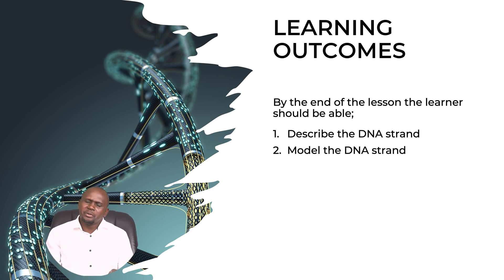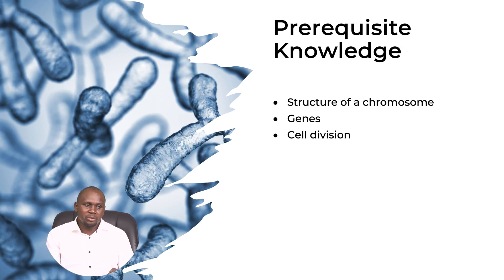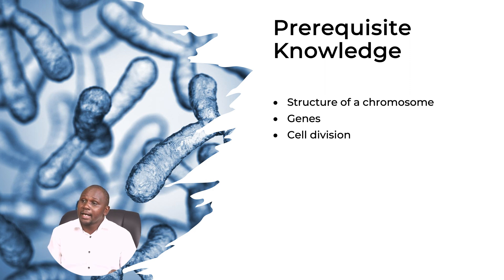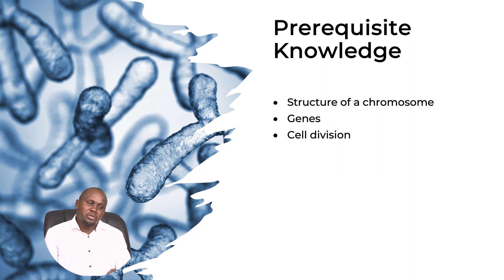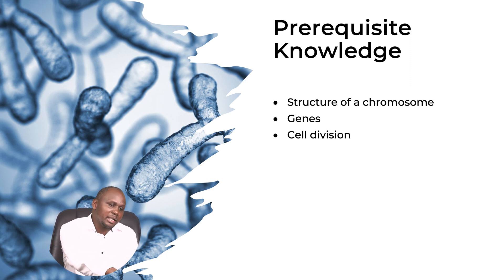Before we continue with DNA, some prior knowledge you need to understand is the structure of the chromosome, because that's where we shall find the DNA and the genes which carry inheritable traits. In Form 3, we also learned about cell division in reproduction.